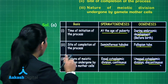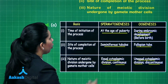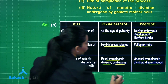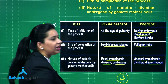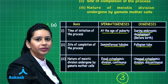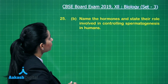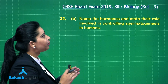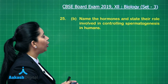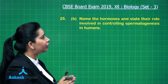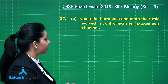You will get one mark for each point and in total you will get three marks for three points. The next part of this question is: name the hormones and state their role involved in controlling gametogenesis in humans.